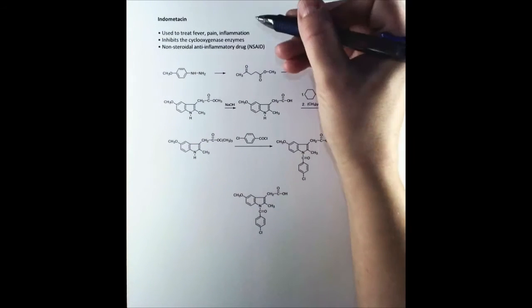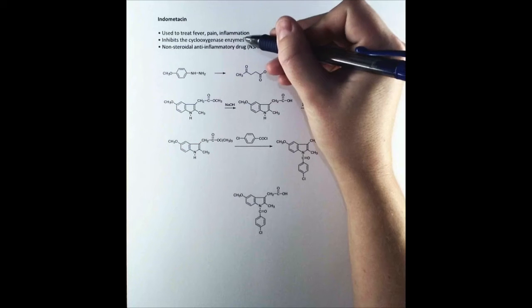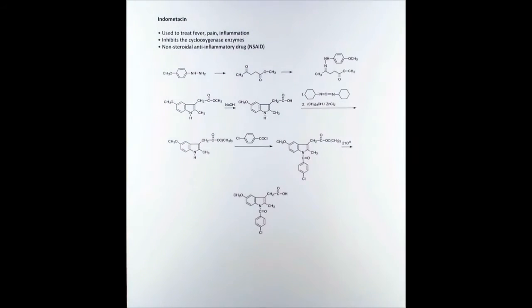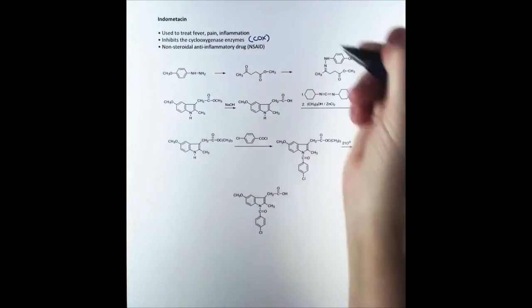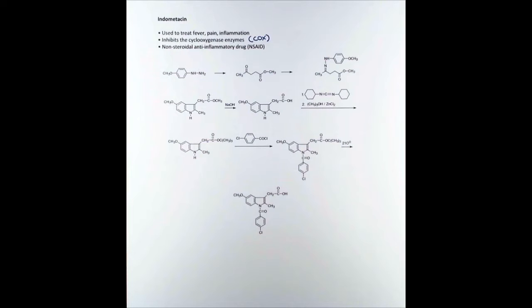Next we have indomethacin. This is used to treat fever, pain, inflammation, and a few other things. It does so by inhibiting the cyclooxygenase enzymes. These are commonly called COX, and there's COX-1 and 2. The COX enzymes are involved in prostaglandin synthesis which is critical in the inflammation process. These are classified as nonsteroidal anti-inflammatory drugs or NSAIDs, and I'm sure you've seen this abbreviation before.